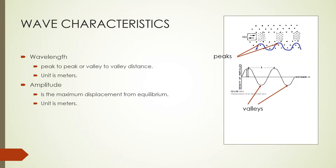All waves, whether transverse or longitudinal, can be characterized by defining the wavelength, amplitude, frequency, and speed of the wave. When you look at the top image, the wave travels a peak-to-peak or valley-to-valley distance over one cycle. The distance covered by one cycle is called wavelength, and it is measured in meters. The amplitude of the wave is the maximum distance from the equilibrium position and is also measured in meters.